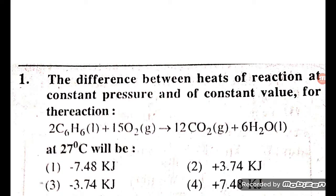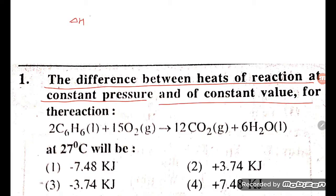Students, let's try to understand one problem: the difference between heat of reaction at constant pressure and constant volume. Constant pressure means we are talking about delta H, and constant volume means we are talking about delta U, internal energy. So that is equal to delta ng times RT.